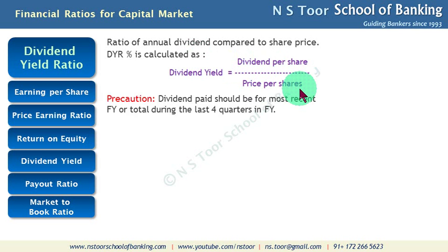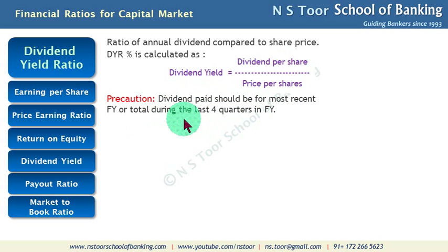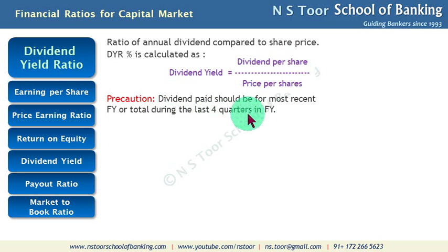A precaution to be taken whenever we are making the calculation: the dividend paid should be the most recent financial year dividend, or total during the last 4 quarters in the financial year. If a company is paying dividend on an interim basis, then whatever dividend has been paid during the financial year must all be added together, because we have to take into consideration the total dividend paid during the year.